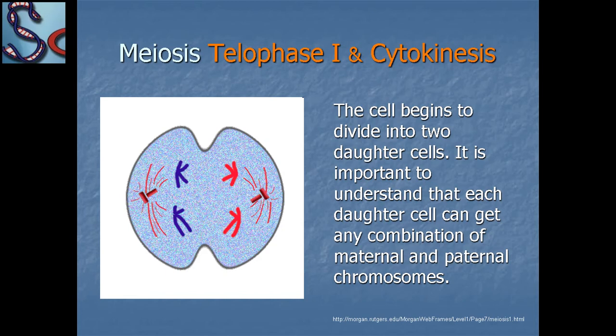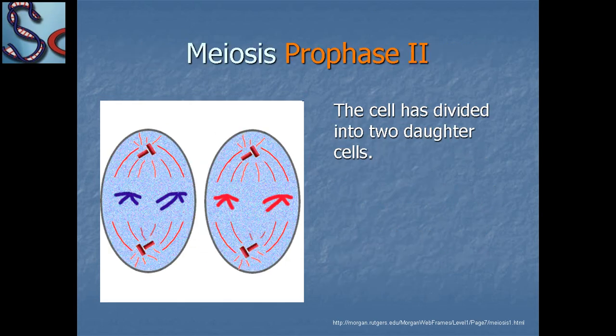In meiosis telophase one, telophase one and cytokinesis occur simultaneously. The cell begins to divide into two daughter cells. It is important to understand that each daughter cell can receive any combination of maternal and paternal chromosomes. The cell has now divided into two daughter cells, marking the end of meiosis prophase two.